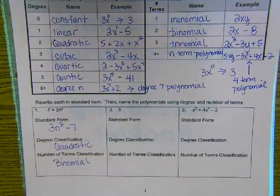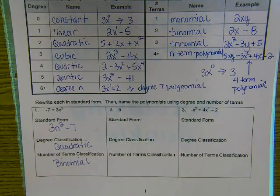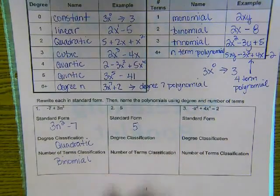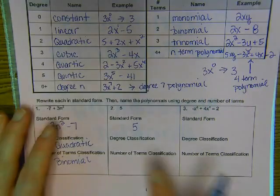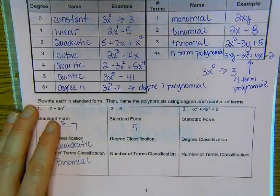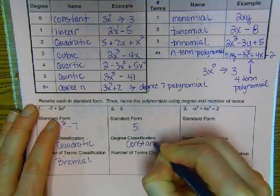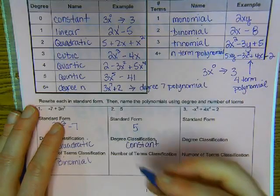Next one. Well, this is easy. If there's just one term, we can't rearrange it, right? So its standard form is five. All right. What degree is this? Zero. So what do we have? What's our name for degree zero above? Constant. Constant. And there's only one term. So we call it a monomial.